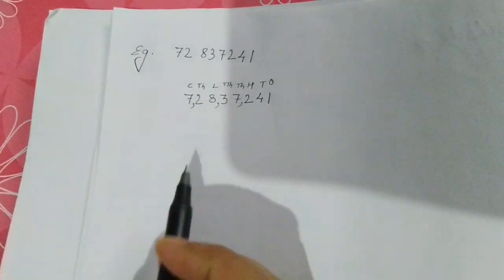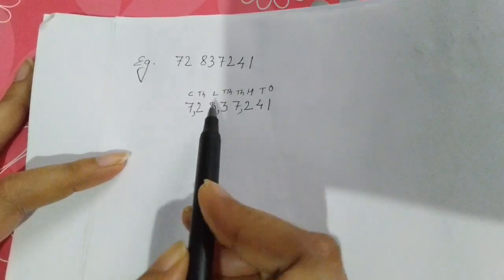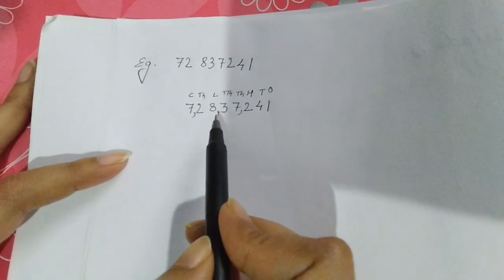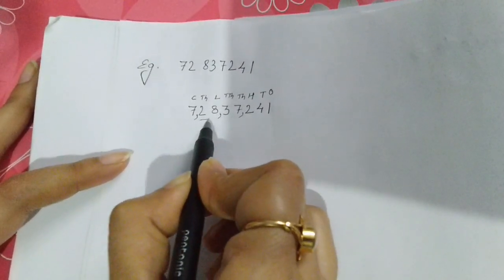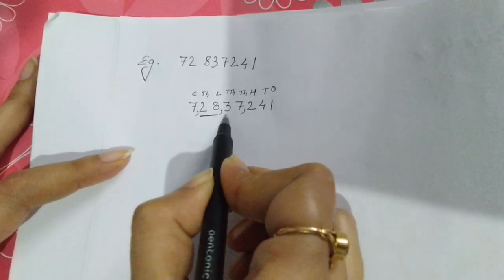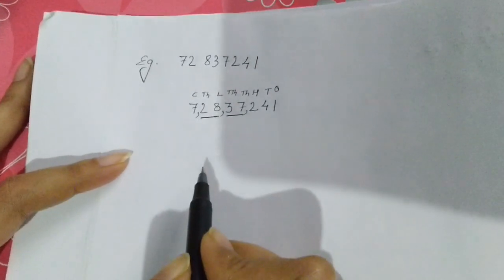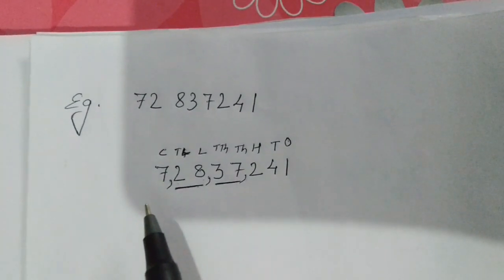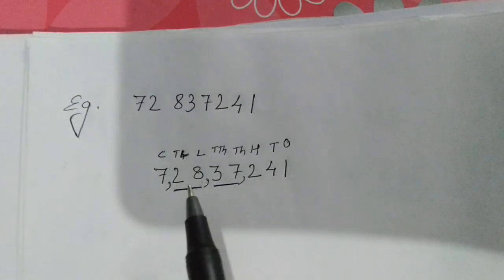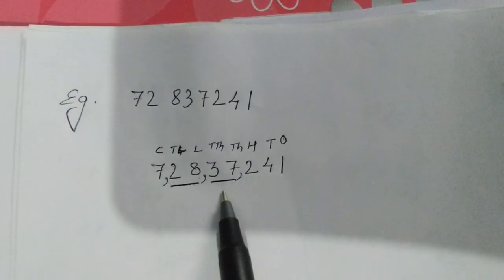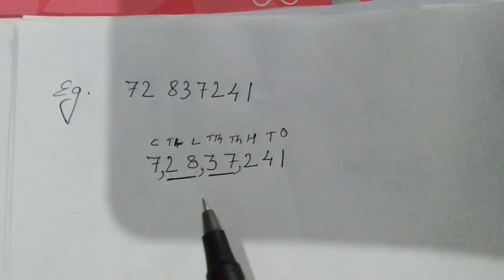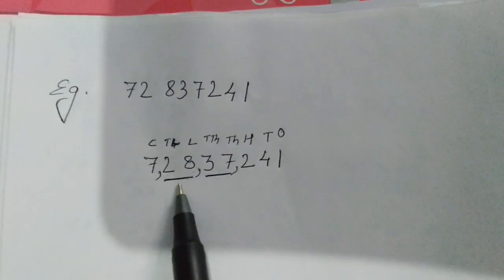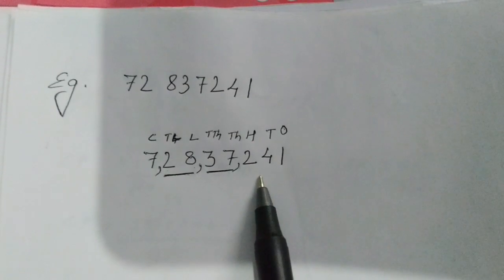Now we can read out the number. While reading, we take the digits in each period together. So two and eight belong to the lakhs period, and three and seven belong to the thousands period. Reading the number: seven crore, twenty-eight lakh, thirty-seven thousand, two hundred forty-one. I'll repeat: seven crore, twenty-eight lakh, thirty-seven thousand, two hundred forty-one.